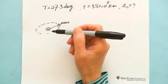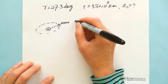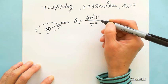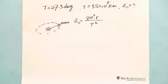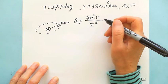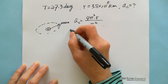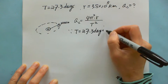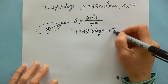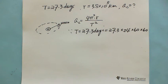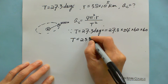First, convert T into seconds: T equals 27.3 days times 24 hours per day times 60 minutes per hour times 60 seconds per minute, which gives 2.36 times 10 to the 6 seconds. Then find omega: omega equals 2π divided by T, which equals 2π divided by 2.36 times 10 to the 6, giving 2.66 times 10 to the negative 6 radians per second.